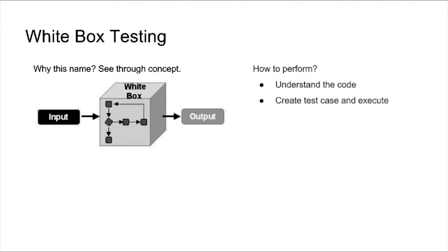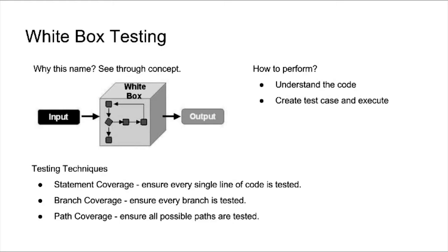The first step involved in the process is understanding the source code of the application. The tester must be familiar with the programming language used in the application. The next step involves testing the application source code for proper flow and structure. There are a few testing techniques which help achieve this: statement coverage, which ensures every possible statement in the code is tested at least once; branch coverage, which tests all logical decisions — all ifs should have both true and false checked; and path coverage, which makes sure every unique path through the program is executed at least once.